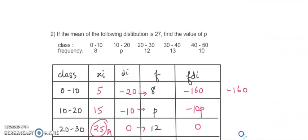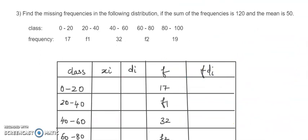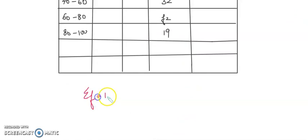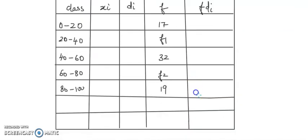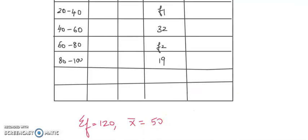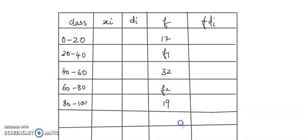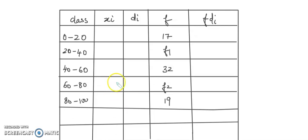The next question has two missing frequencies, so there are two pieces of information given: sigma f is 120 and the mean is 50. Mid values: 20 divided by 2 = 10, 60 divided by 2 = 30, 100 divided by 2 = 50, 140 divided by 2 = 70, 180 divided by 2 = 90. The assumed mean A is 50.